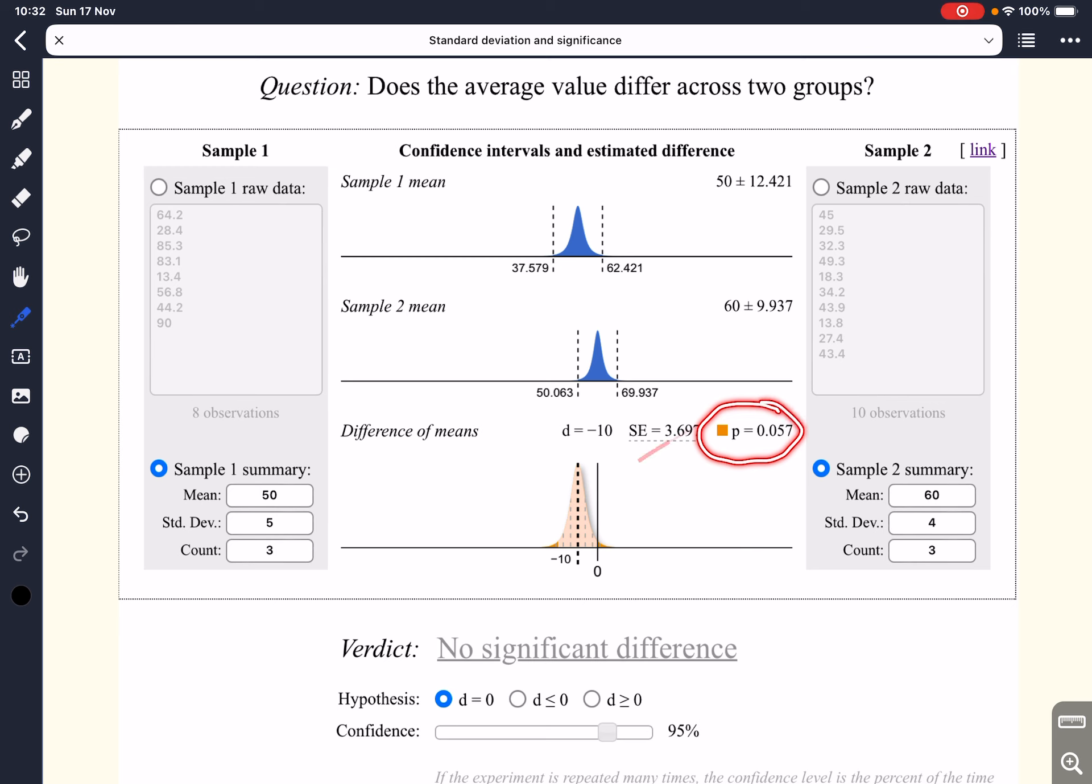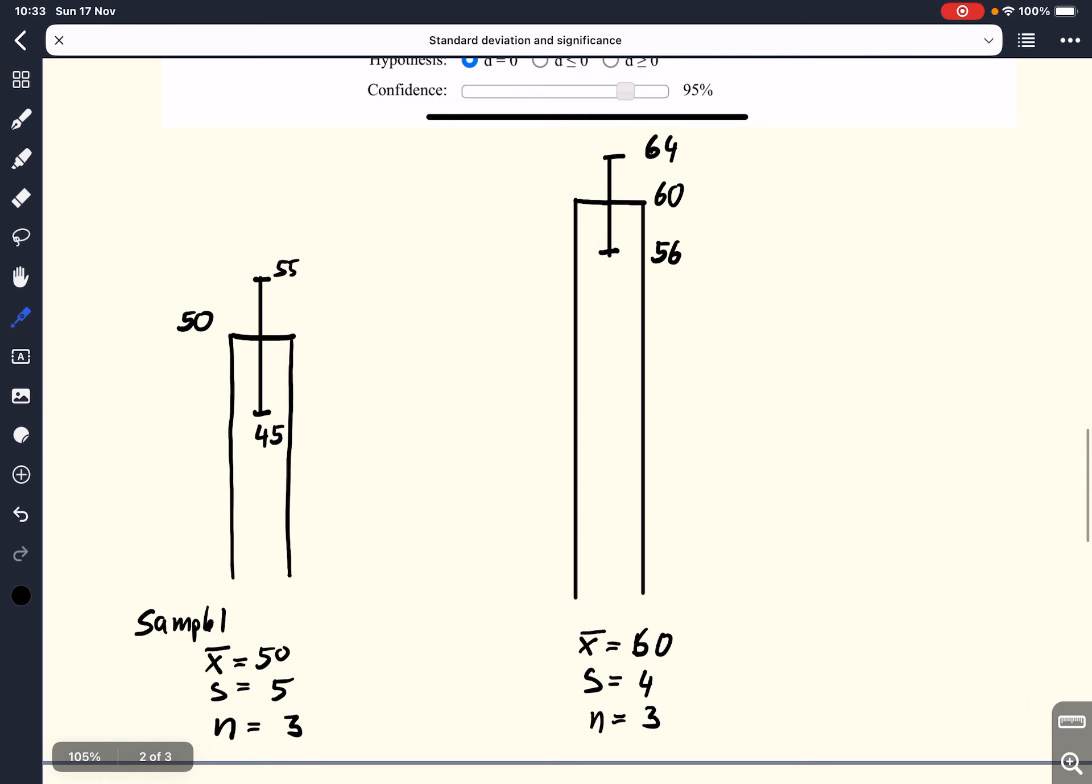And indeed, it calculates a p-value. The p-value is 0.057. And if we assume a significance level alpha of 5%, we see that the p-value is larger than our significance level alpha. This means that there is no significant difference between the two samples. So what we see here is that although the error bars with the standard deviations do not overlap, in this particular case, we find that the samples are not different.